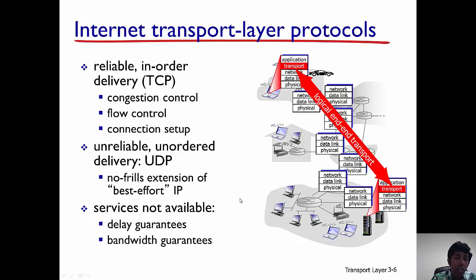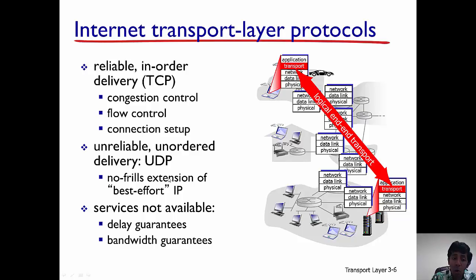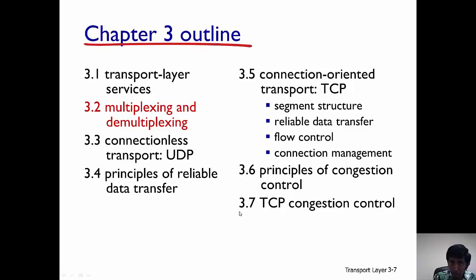The transport layer does not provide any guarantees of delay or bandwidth. Remember that the internet is a best-effort service and has never been designed to provide strict guarantees — neither delay guarantees nor bandwidth guarantees. So neither TCP nor UDP provide any of these guarantees. With this we will end this lecture, and in the next lecture we will begin by discussing multiplexing and demultiplexing in the transport layer. Thank you.